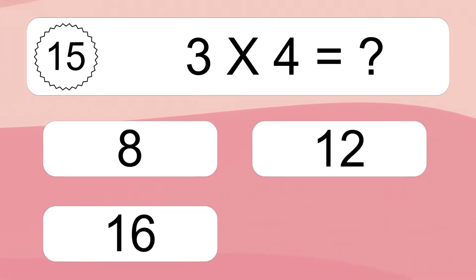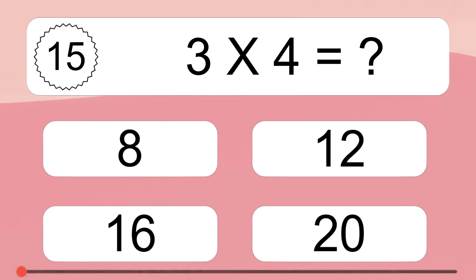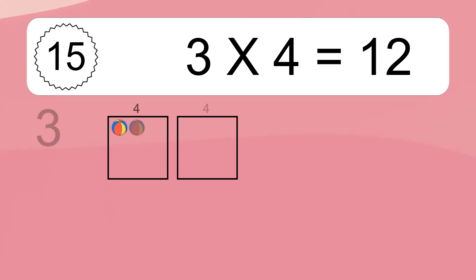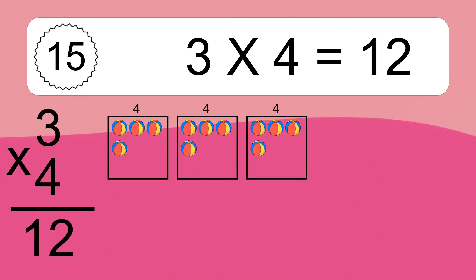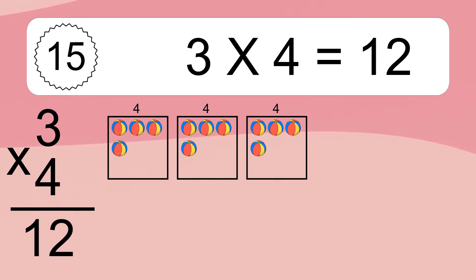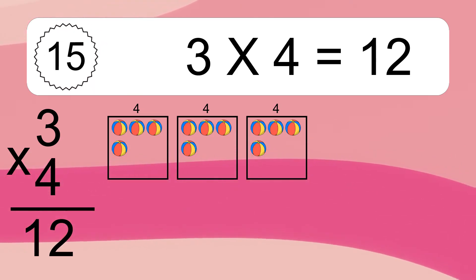3 times 4 equals what? We have 3 boxes, and each box has 4 colorful balls inside. If you count all the balls in all the boxes together, you will have 3 times 4 balls. This equals 12 balls.